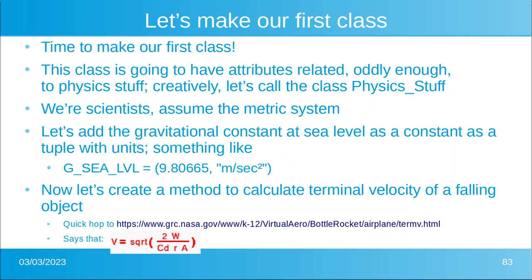Now it's time to make our first class. This class is going to have attributes related to physics, so let's call the class 'PhysicsStuff'. We're assuming the metric system. Let's add the gravitational constant at sea level as a constant, which is a tuple with units — something like what you see there.